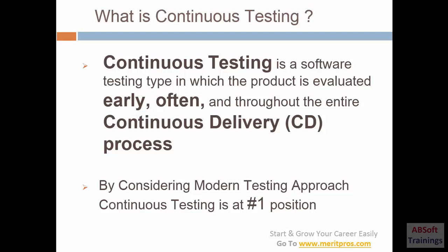Continuous testing is the software testing type in which the product is evaluated early, often, and throughout the entire continuous delivery process. By this definition, the product is going to be tested early, often, and throughout the continuous delivery process. The product may be a web application, API, or whatever it may be. In our modern testing approach, continuous testing is going to become number one in our market.